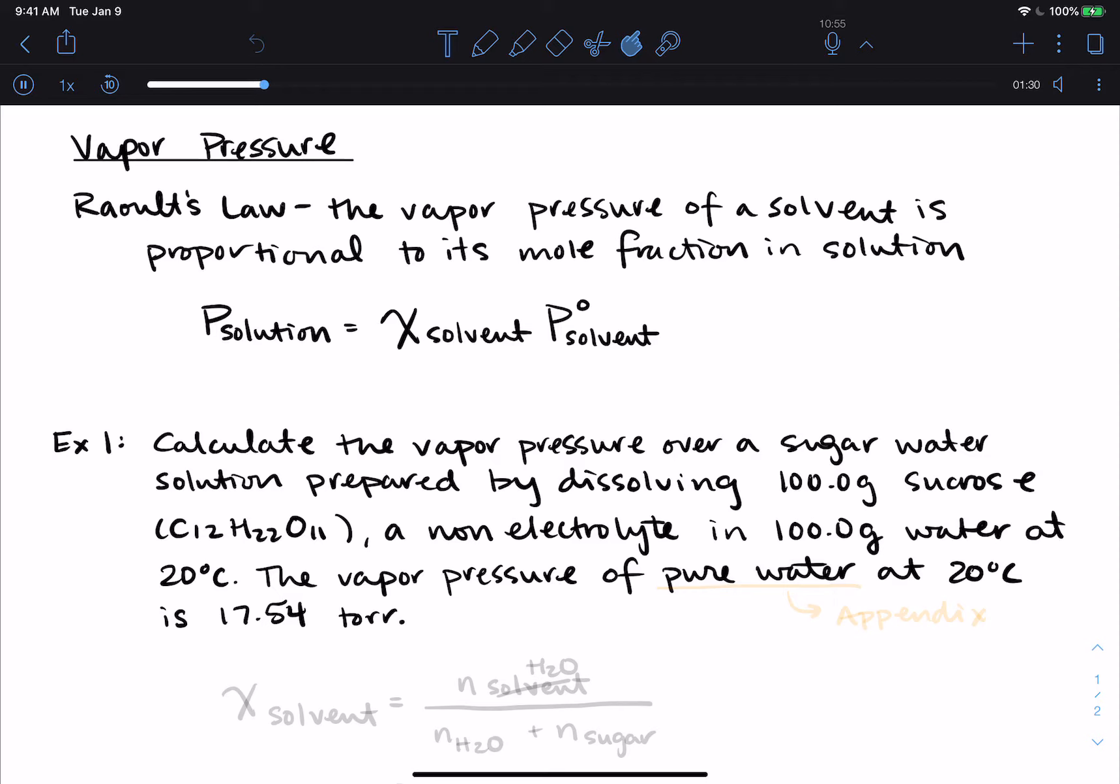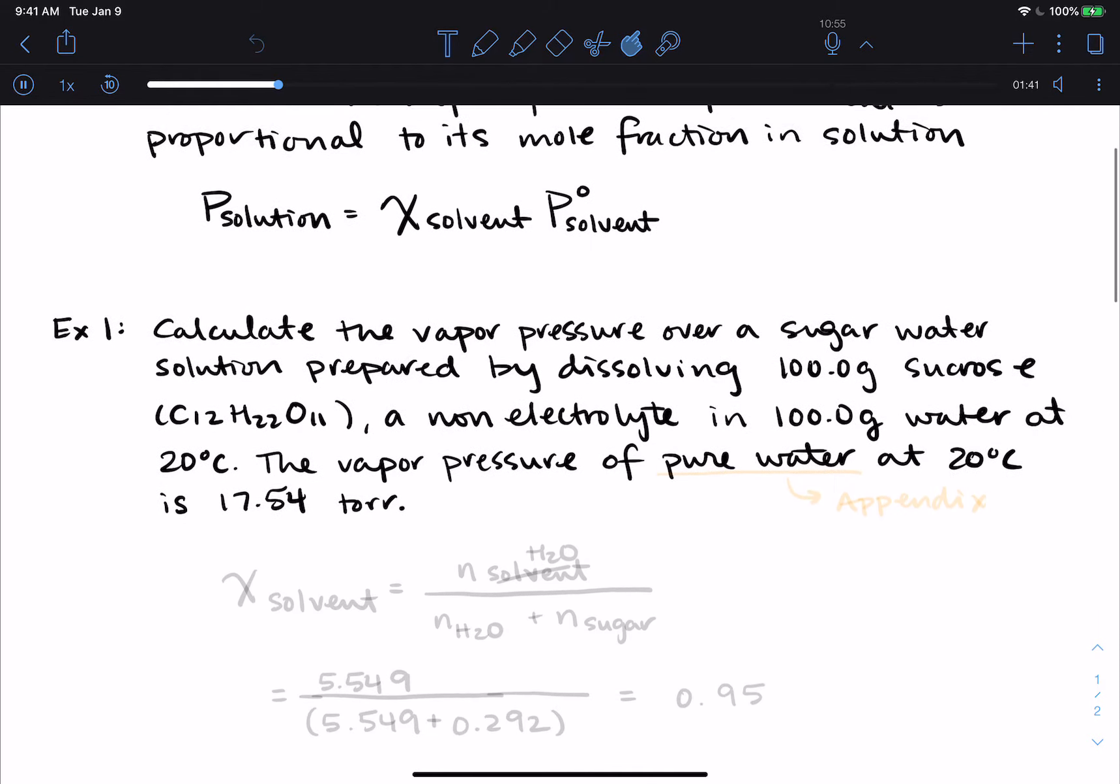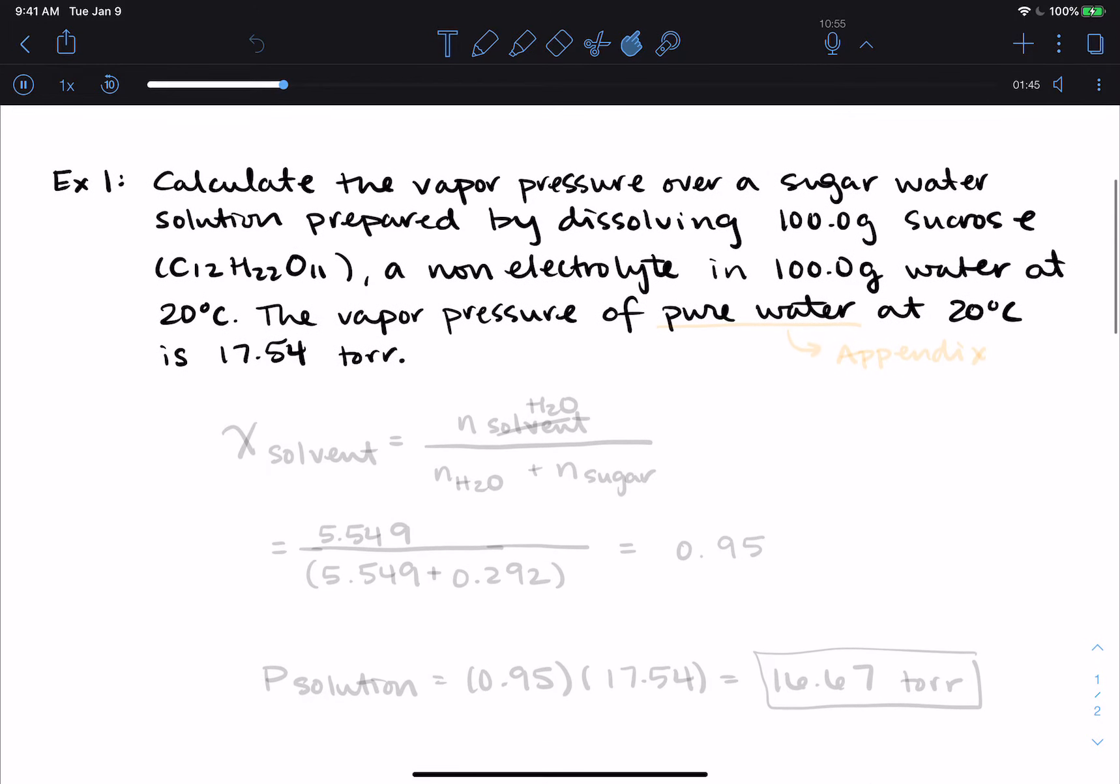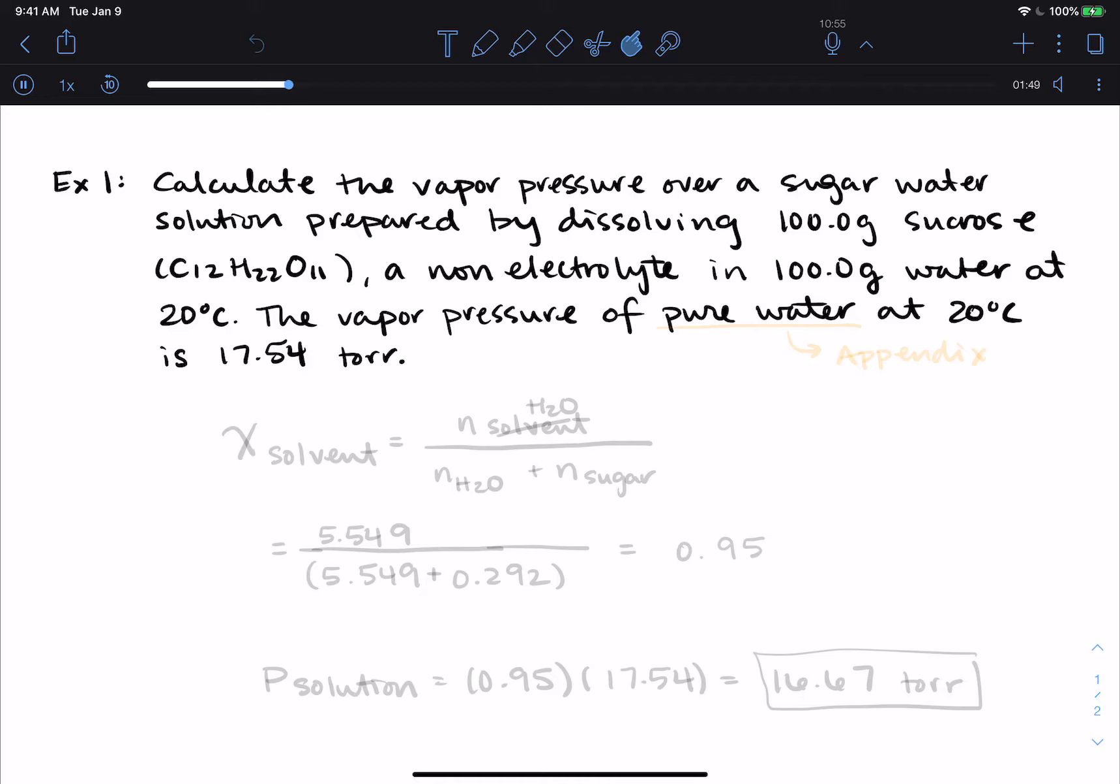So this works best just by showing some examples. So I'm going to pause, write out this problem, and then we will give it a try. The first example is calculate the vapor pressure over a sugar water solution prepared by dissolving 100 grams of sucrose, which is C12H22O11, a non-electrolyte, in 100 grams of water at 20 degrees Celsius. And it also tells us, so we don't have to go look it up, the vapor pressure of pure water at 20 degrees is 17.54 torr. But if we didn't have this piece of information, the pure water vapor pressure, this is in an appendix or a data table somewhere. This is a value that you would be able to look up if you needed to.